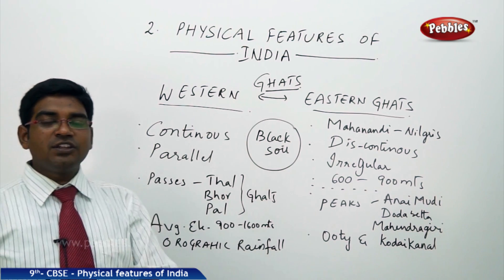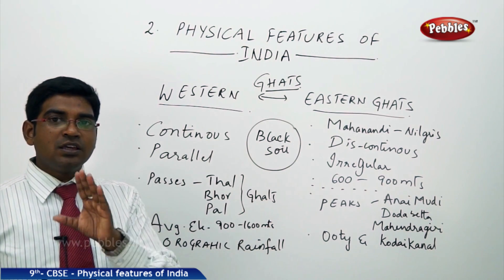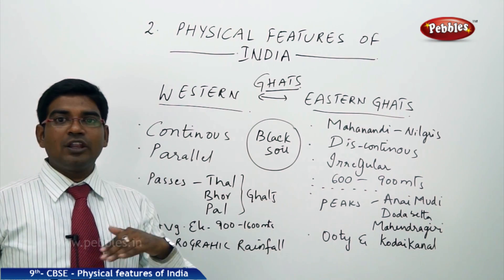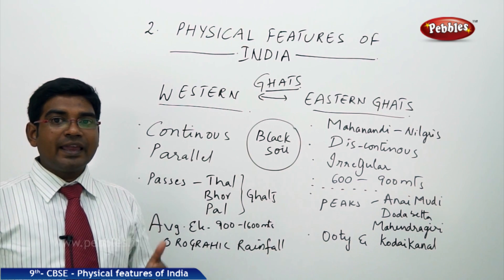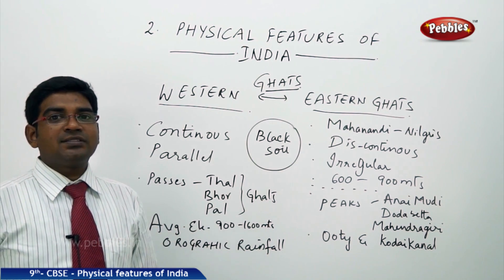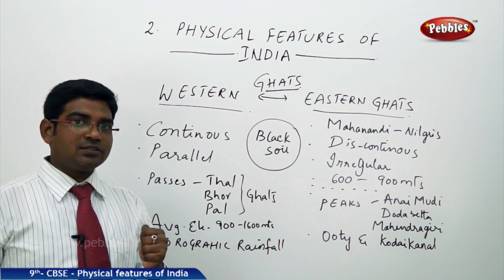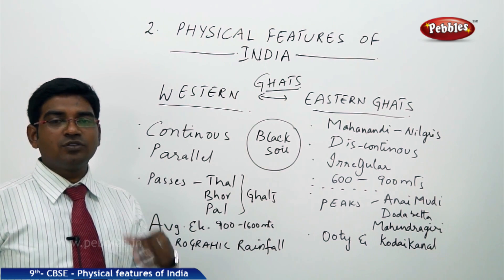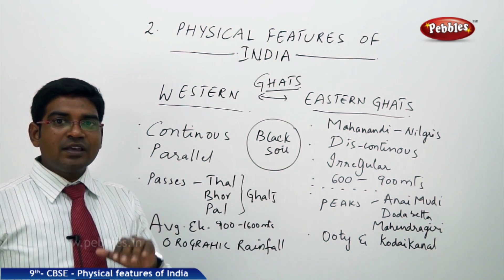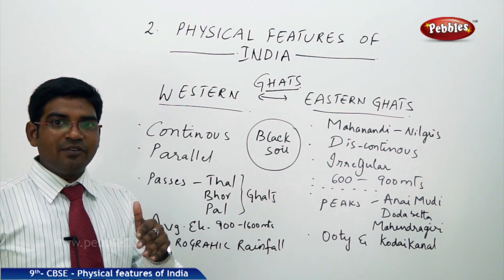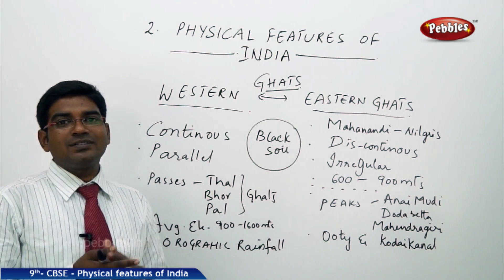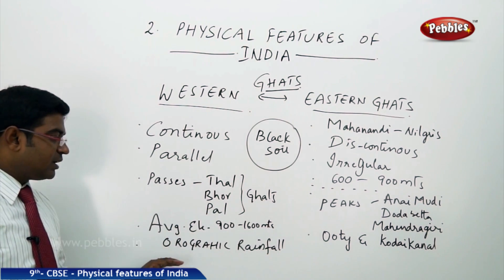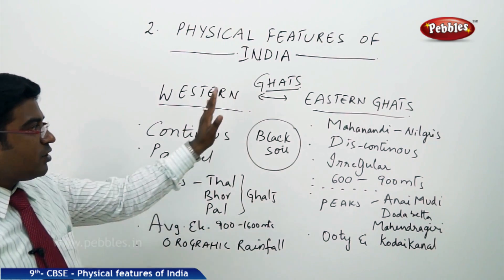The Western Ghats run continuously parallel to the western coast of India with an average elevation of 900 to 1600 meters, which is higher when compared to the Eastern Ghats. That is the reason why almost all rivers in the peninsular plateau flow towards the eastern side — because the western side is already elevated, making the rivers flow eastward, slightly tilted.